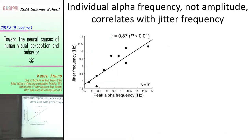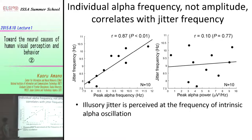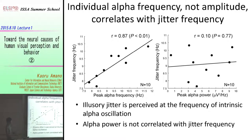This figure shows the relationship between peak alpha frequency measured during the resting state and the passive jitter frequency measured psychophysically. We found a very strong correlation — the illusory jitter is perceived at the frequency of the intrinsic alpha frequency that subjects already have. And if you look at the relationship between peak alpha power and jitter frequency, there was no correlation. So the passive jitter frequency reflects intrinsic peak alpha frequency, not power.